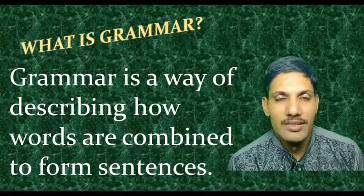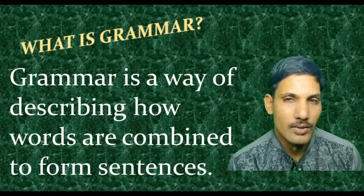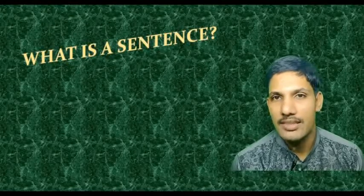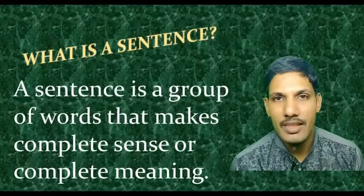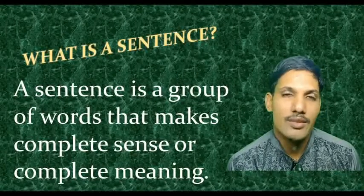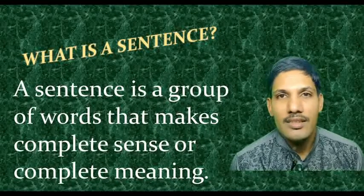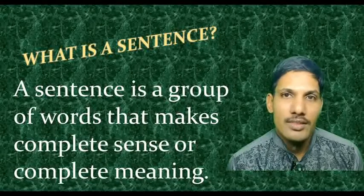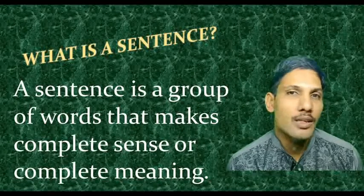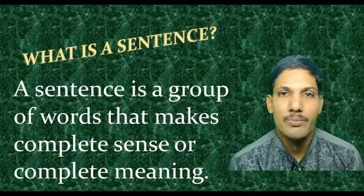In this lesson, we are going to study the types of sentences. Before that, let us understand what a sentence is. A sentence basically is a group of words that makes complete sense or complete meaning. That means a sentence is a group of words that has a particular order, not just a jumble of any words put anyway, as it will not give you proper meaning.